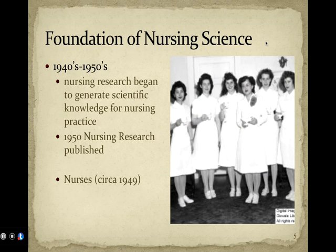In the 1940s and 1950s, nursing research began to generate scientific knowledge for nursing practice. We started to have a scientific basis for different interventions, and not just 'this is the way it's always been done.' The journal Nursing Research was first published during this era. The nurses in this picture are circa 1949.